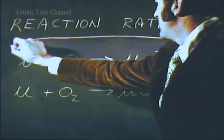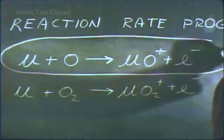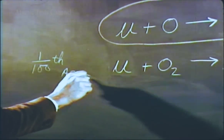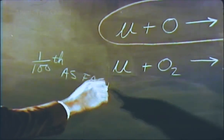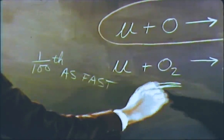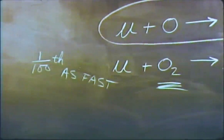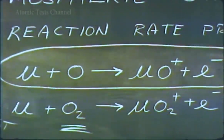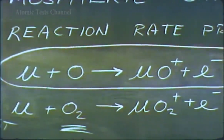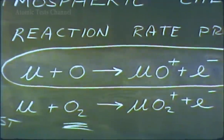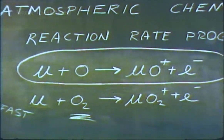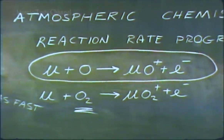The first reaction is very fast. The rate of the second reaction is almost a hundred times slower, but still significant at altitudes where molecular oxygen exists in abundance. These reactions not only yield free electrons, but probably also produce abundant infrared radiation from the excited ions.